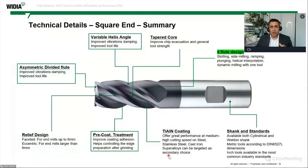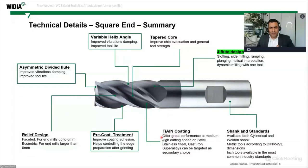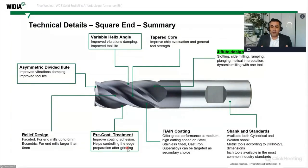The TiAlN coating performs well on steel, stainless steel, cast iron, and super alloys as a secondary choice. Before coating, a pre-coat treatment process is applied — this is important to ensure good coating adhesion and helps control edge preparation after grinding. These two things work together for coating performance.